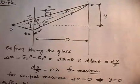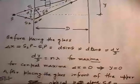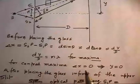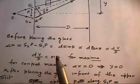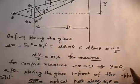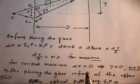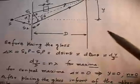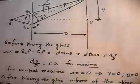So the path difference S2P − S1P = dy/D. For maxima, the path difference should equal nλ (i.e., λ, 2λ, 3λ...). For central maxima, path difference equals zero, so n = 0, which gives y = 0. This means central maxima will be observed at the middle of the screen — let us call this point O.